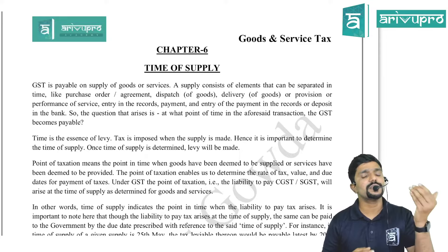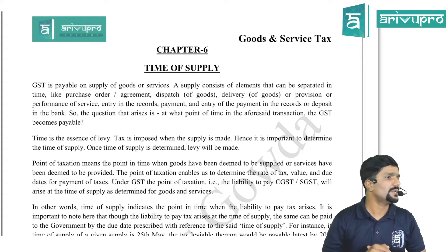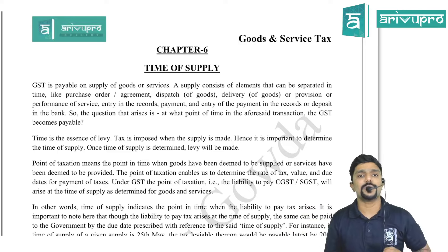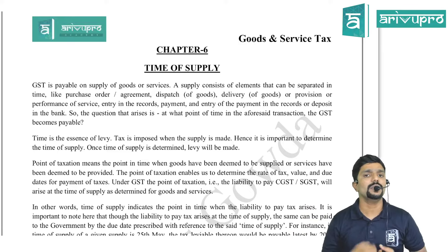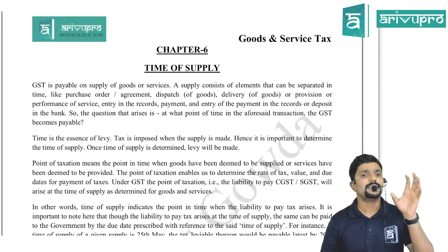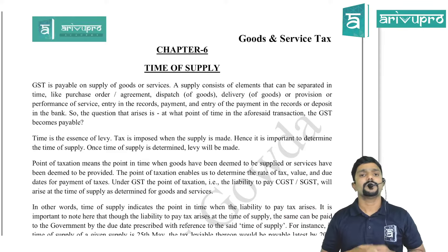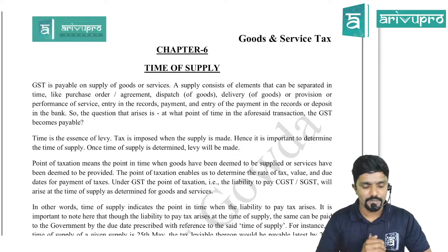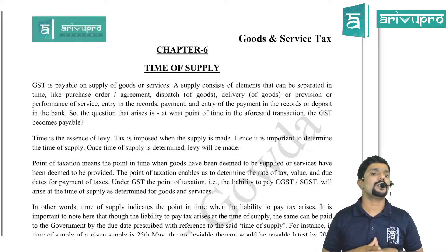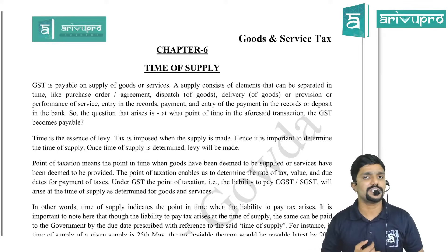The exemption list is given in Section 11 of the CGST Act or Section 6 of the IGST Act, read with notification. Once we remove the negative list and exemption list from supply, we get taxable supply. We should also identify who is the person liable to pay tax — whether supplier, recipient, or electronic commerce operator. If it is the ECO, only four services have been notified as per Section 9(5) of CGST or 5(5) of IGST. If the recipient is liable, we call that mechanism Reverse Charge Mechanism as per Section 9(3) or 9(4) of CGST, read with notification.